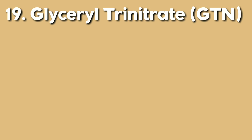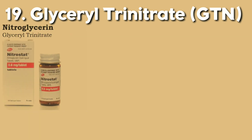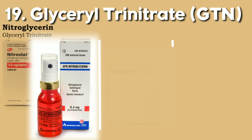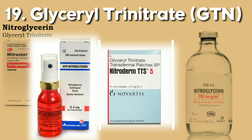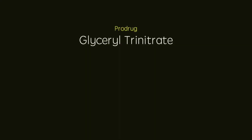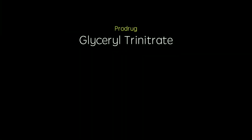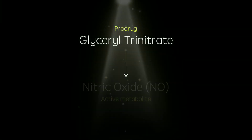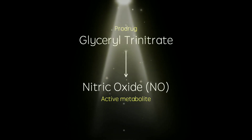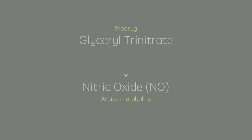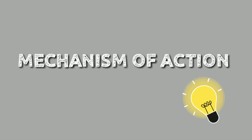GTN or nitroglycerin is available as sublingual tablet or spray, patch, and IV infusion. Glyceryl trinitrate is actually a pro-drug — GTN undergoes denitration to give nitric oxide. Now let's look at the mechanism of action.